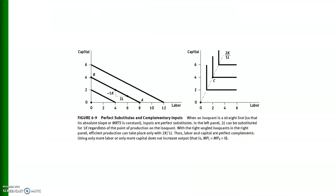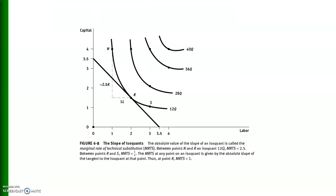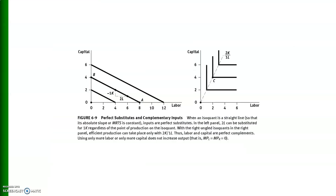The usual isoquants are negatively sloped, convex to the origin, and non-intersecting. There are two extreme cases. On the left, isoquants are negatively sloped straight lines, representing perfect substitutes — when labor and capital are perfect substitutes, isoquants are linear. When labor and capital are perfect complements, isoquants are L-shaped.